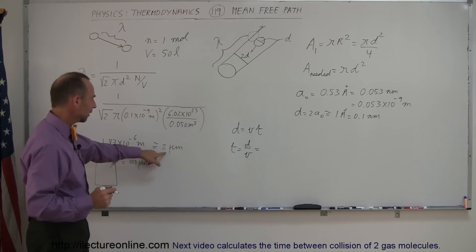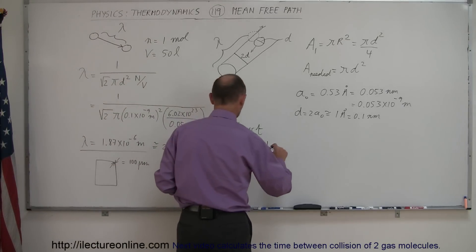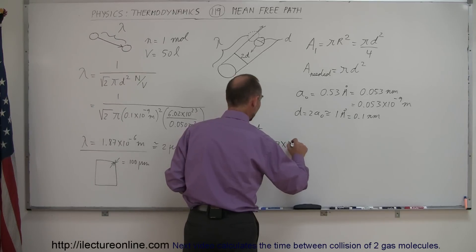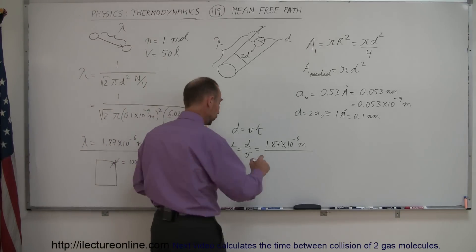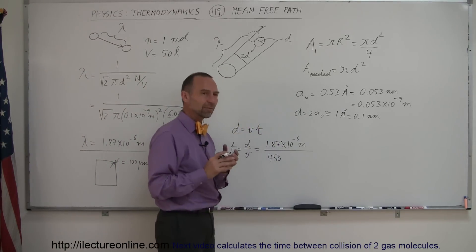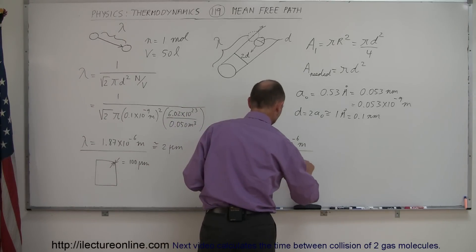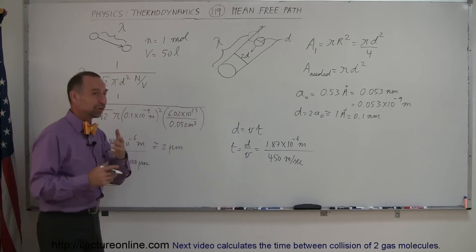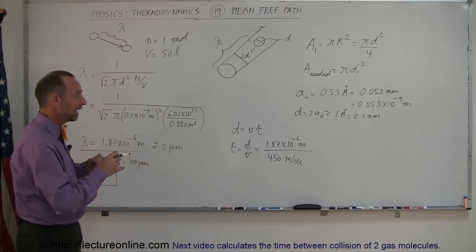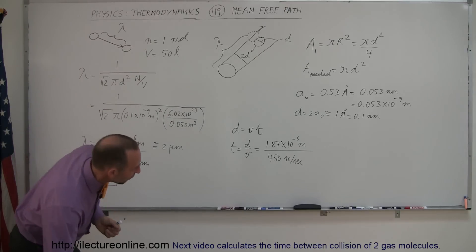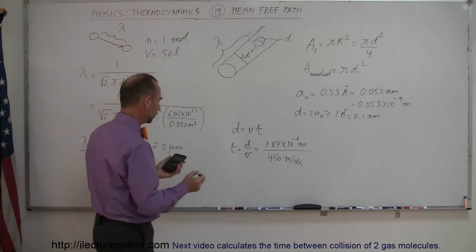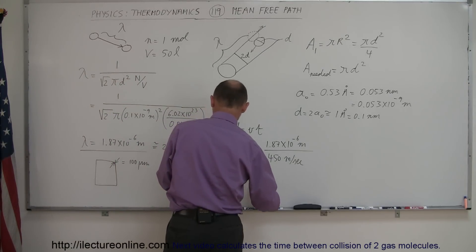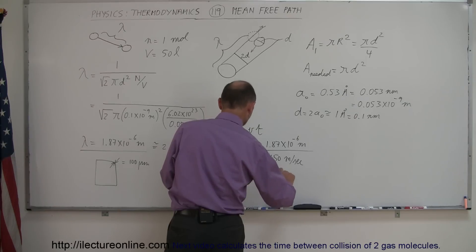And so if we take, for example, that a molecule travels this far, 1.87 times 10 to the minus 6 meters before it collides with another molecule, and then if its velocity is about 450 meters per second, which is the typical velocity of a molecule in a room. And remember, I took a density that was about half the normal density, so normally it would only travel about half as far before it collides. So we have this number divided by 450 equals, and so the time is equal to 4.15 times 10 to the minus 9 seconds.